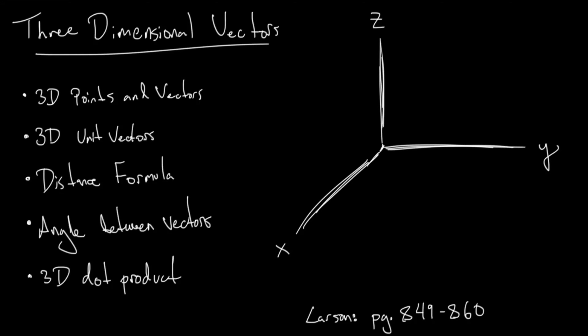In this video we are going to look at three-dimensional vectors. We're going to graph some 3D points, some 3D vectors. We'll also look at the unit vectors in three dimensions, the distance formula, the angle between vectors, and the dot product all in three dimensions. Basically, this video is just a recap of everything we just did in two dimensions, but with an added direction z. If you want to check out this material in the textbook, it is at page 849 to 860 in the Larson textbook. Let's go ahead and get started with some 3D.